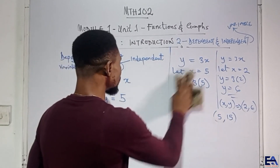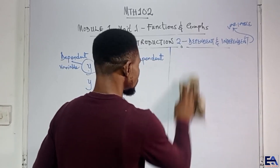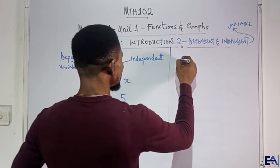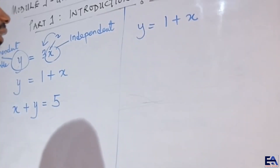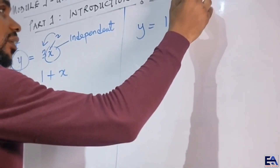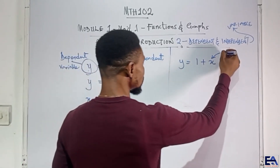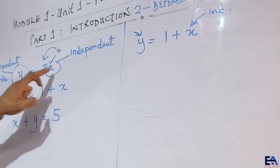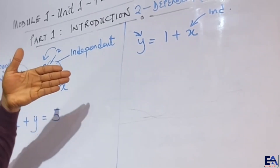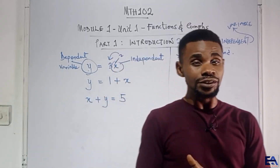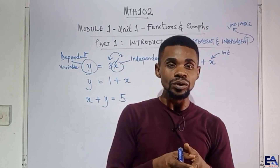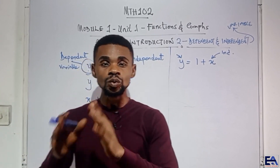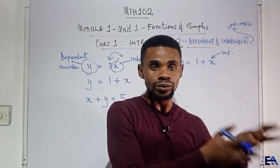The same thing goes for the second equation. If y equals 1 plus x, then x is the independent variable and y depends on x. So we can say y is a function of x, because it depends on x. If a depends on b, it means a is a function of b, because whatever b has to offer is what determines the value of a.